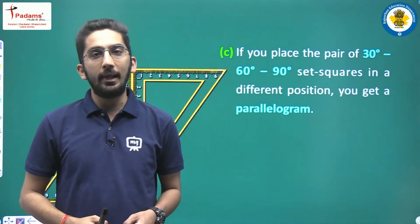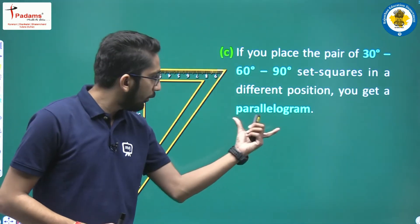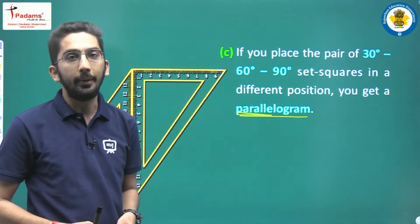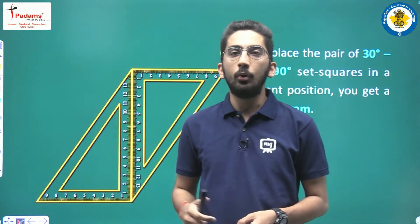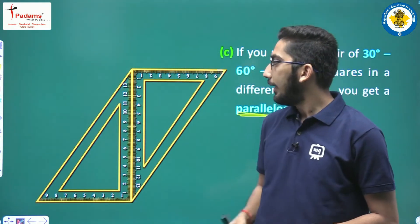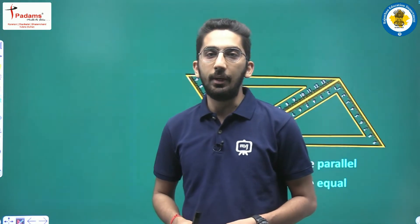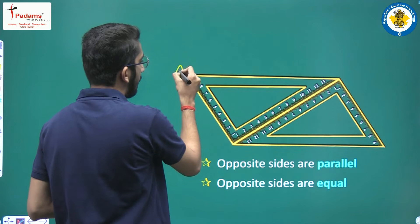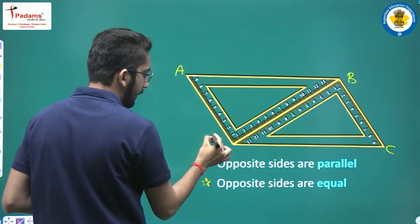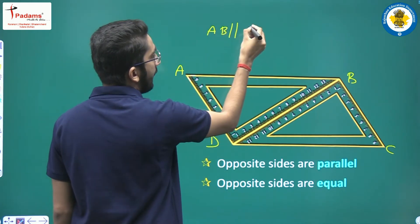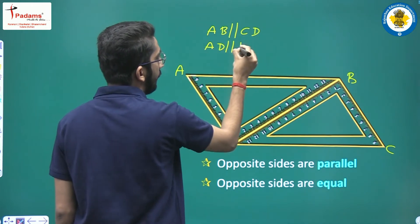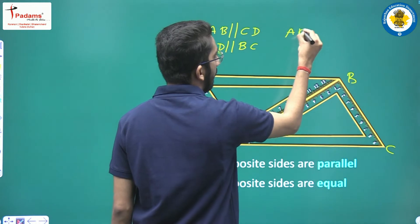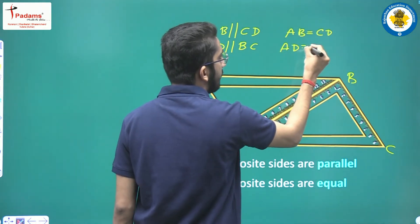Next is a parallelogram. The name may seem a little tricky but you can pronounce it correctly: parallelogram. Notice the word 'parallel' is used in it. If you arrange two 30-60-90 set squares, you will get a parallelogram. Its properties: opposite sides are parallel — ABCD gives AB parallel to CD, and AD parallel to BC — and opposite sides are equal: AB equals CD, and AD equals BC.